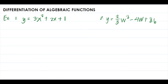Fourth, the derivative of sum and differences; fifth, the derivative of a product; sixth, the derivative of a quotient; seventh, the derivative of a reciprocal; eighth, the derivative of a function with rational exponents; ninth, the chain rule; tenth, the general power rule; and last, the inverse function rule.